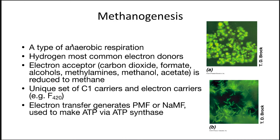What methanogens do is called methanogenesis, and this is a type of anaerobic respiration. Hydrogen is the most common electron donor for them, and the electron acceptor will be either carbon dioxide, formate, sometimes alcohols, methylamines, methanol, or acetate — all reduced to methane. There is a unique set of C1 carriers and electron carriers, such as F420, present in these methanogens. The pictures on the right show methanogens under a fluorescent microscope, and F420 will absorb the fluorescent light and then fluoresce green. It's a nice diagnostic test to see if an organism is actually a methanogen.